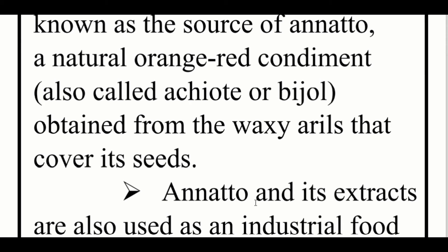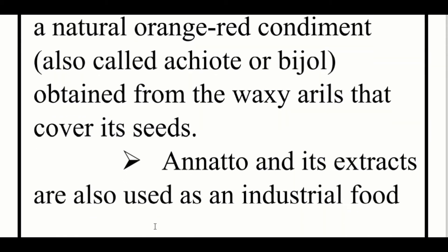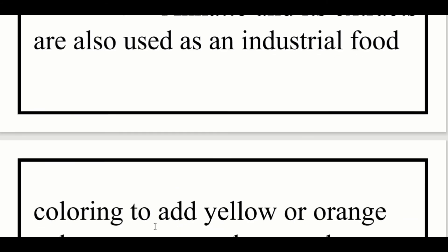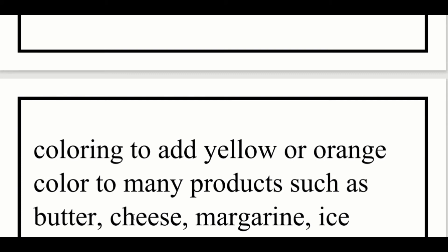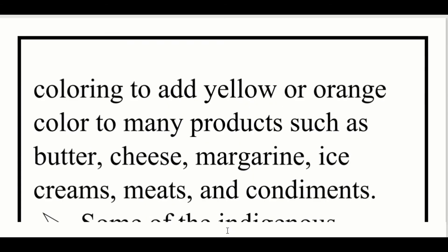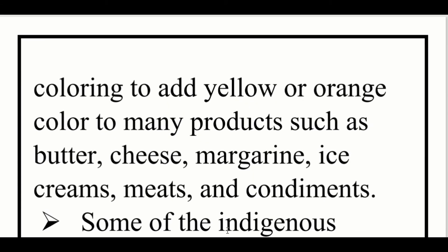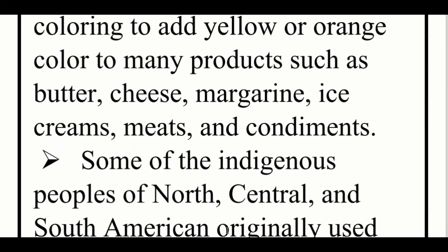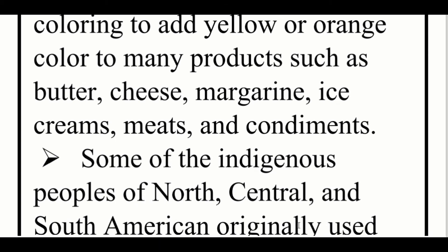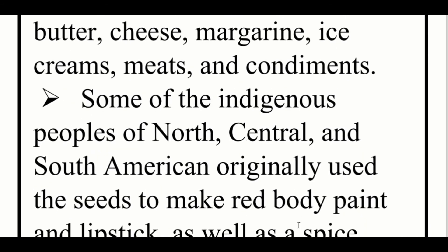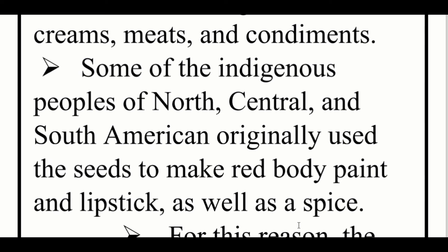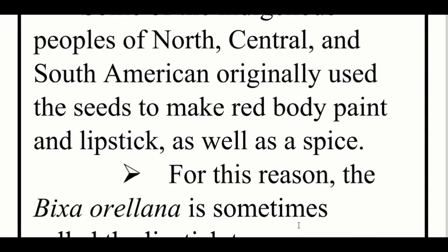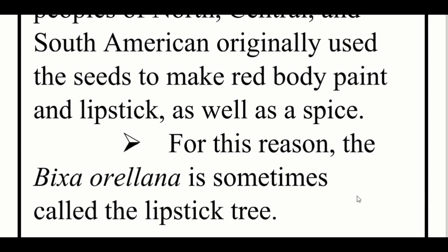Annatto and its extracts are also used as an industrial food coloring to add yellow or orange color to many products such as butter, cheese, margarine, ice cream, meats, and condiments. Some indigenous peoples of North, Central, and South America originally used the seed to make red body paint and lipstick, as well as spice. For this reason, Bixa orellana is sometimes called the lipstick tree.